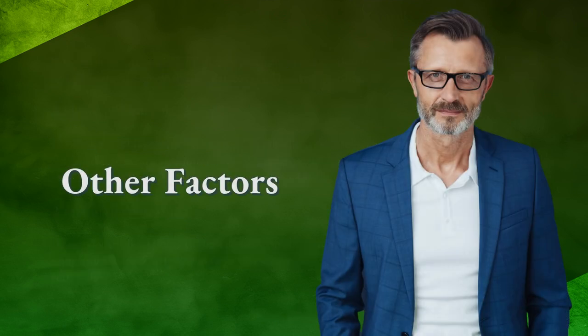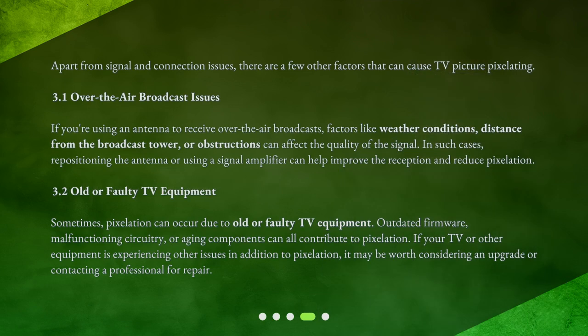Apart from signal and connection issues, there are a few other factors that can cause TV picture pixelating. Over-the-air Broadcast Issues: If you're using an antenna to receive over-the-air broadcasts, factors like weather conditions, distance from the broadcast tower, or obstructions can affect the quality of the signal. In such cases, repositioning the antenna or using a signal amplifier can help improve the reception and reduce pixelation.